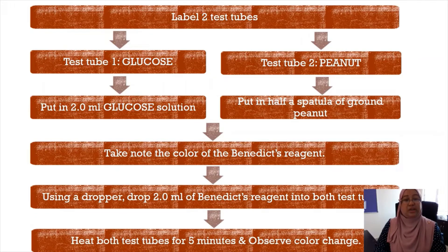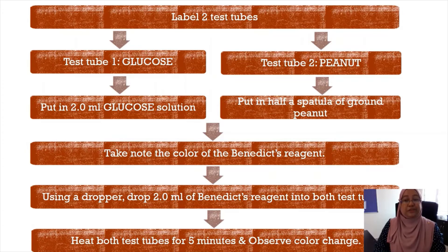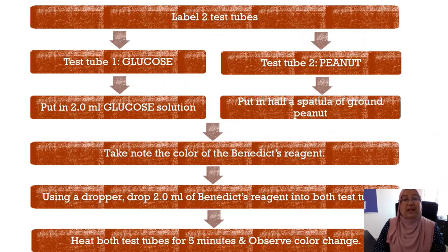This procedure is performed to determine the presence of reducing sugar. Label two test tubes: test tube one for glucose, test tube two for peanut. In test tube one, put in 2 ml of glucose solution; in test tube two, put in half a spatula of ground peanut. Take note of the color of the Benedict's reagent, then using a dropper, add 2 ml of Benedict's reagent into both test tubes. Heat both test tubes for five minutes and observe any color changes.